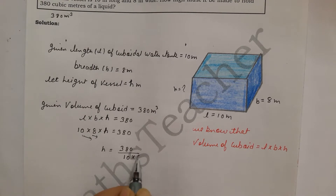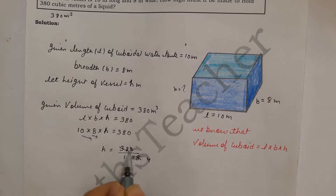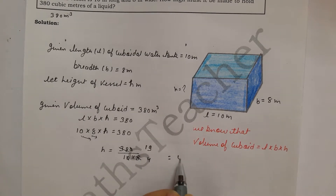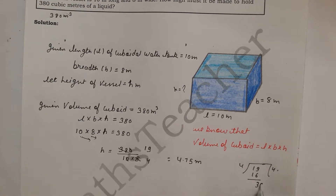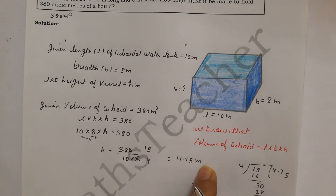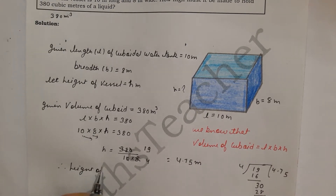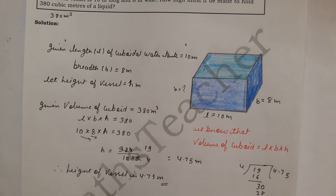So h equals 380 divided by 10 into 8, which is 80. We cancel and divide: 380 by 80 gives 4.75 meters. Since this is height, it will be in meters only, not cubic meters. Therefore, the height of the vessel is 4.75 meters.